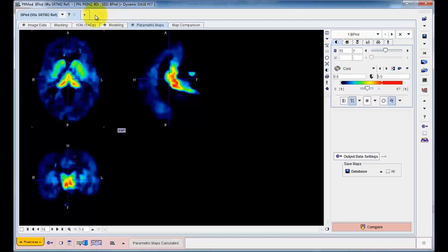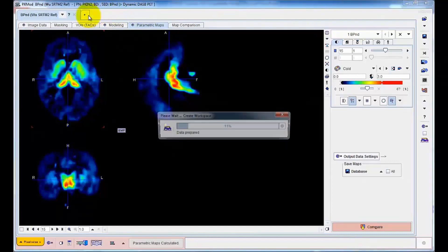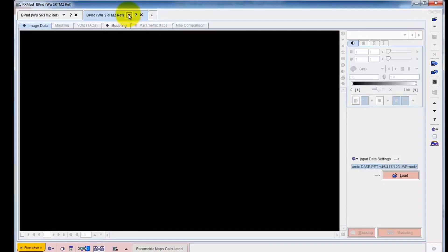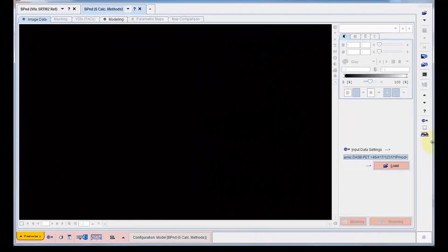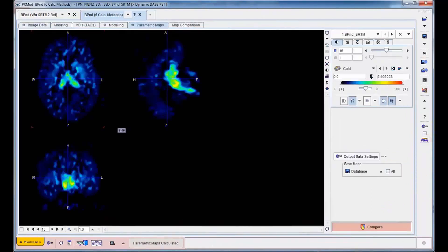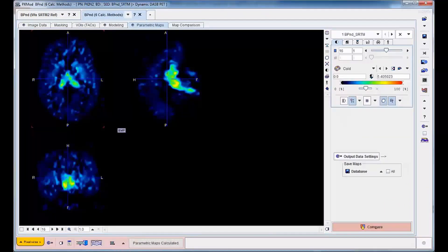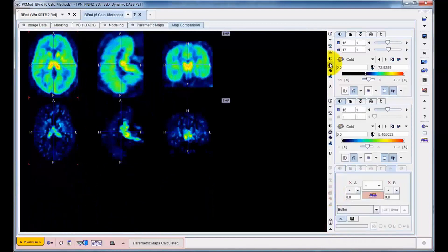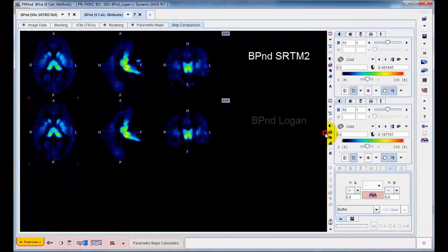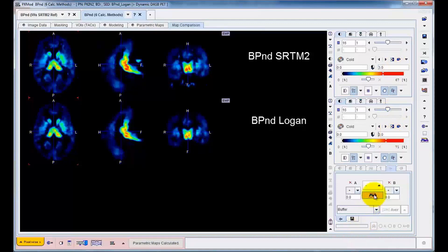There are many different approaches for the calculation of BPND maps. Using PXMOD, they can readily be applied simultaneously in a composite model. The resulting BPND maps can be visualized in parallel and can be numerically compared, for instance, by calculating the difference map.